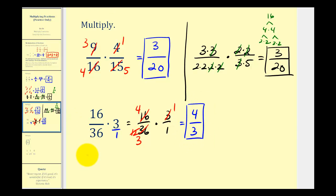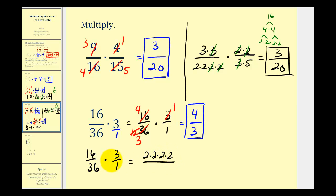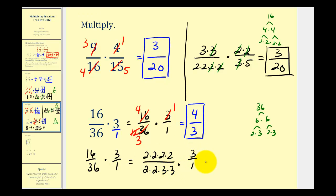Or, starting with sixteen over thirty-six times three over one, the prime factorization of sixteen is four factors of two. Thirty-six would be six times six, and six is two times three, so we have two factors of two and two factors of three. Three over one remains. This prime factorization method is more time consuming, but it's a nice way to see all common factors that simplify to one: three over three, two over two, and two over two. That leaves a numerator of two times two, or four, and a denominator of three times one, which equals three.